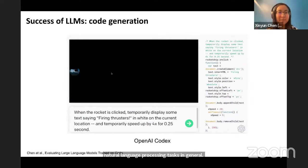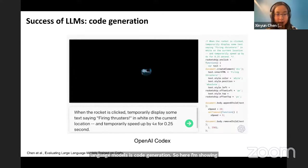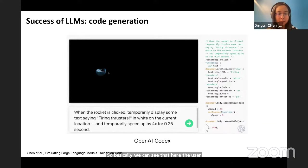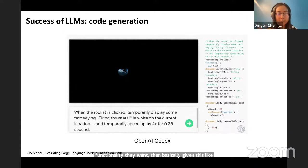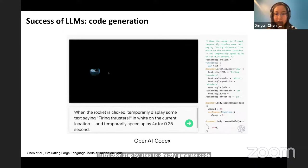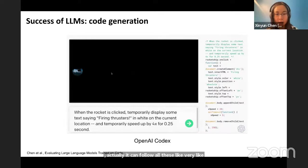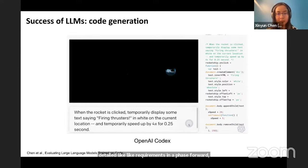Another very successful application of large language models is code generation. One of the earliest large language models for code generation is the OpenAI Codex model. The user provides a detailed description of the functionality they want, and given this description, the model is able to follow the instructions step-by-step to directly generate code that is directly executable. It can follow all the detailed requirements, including concrete arguments specified in the problem description.